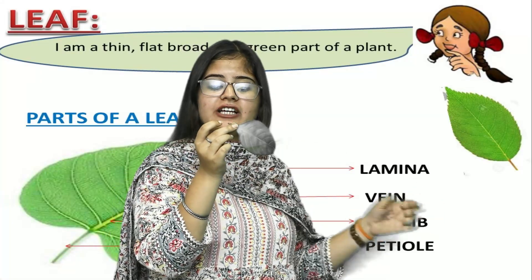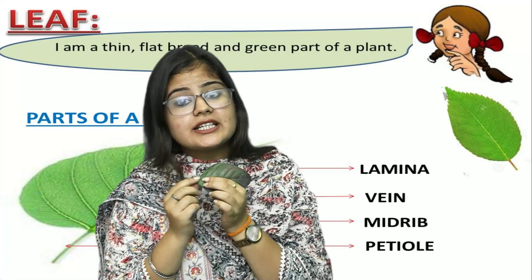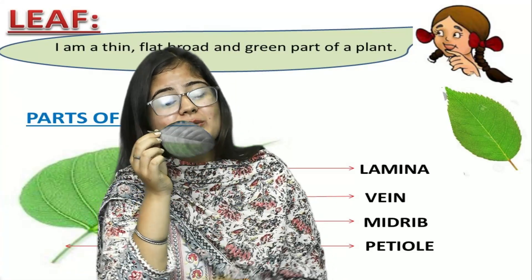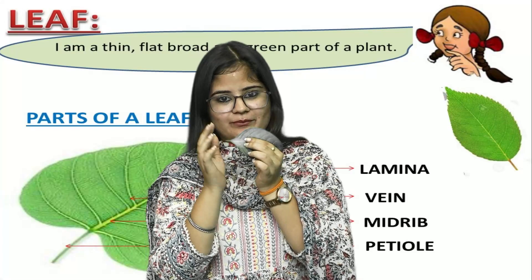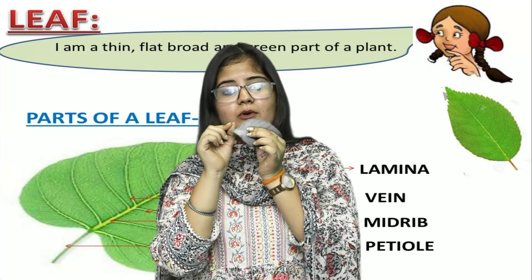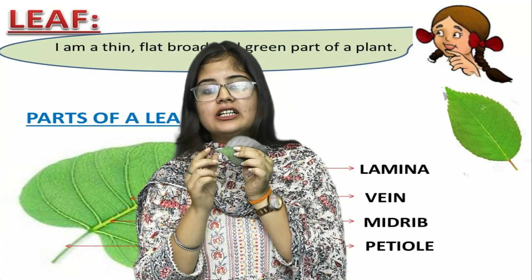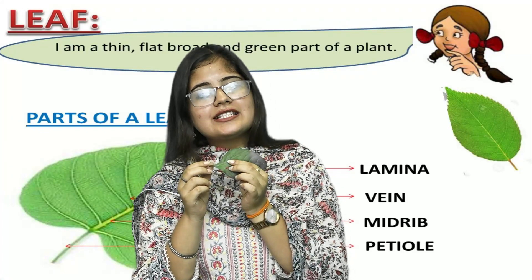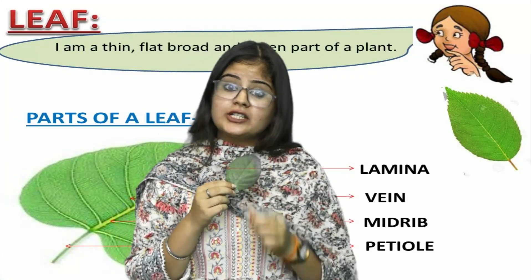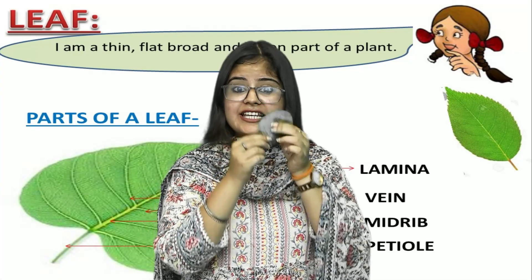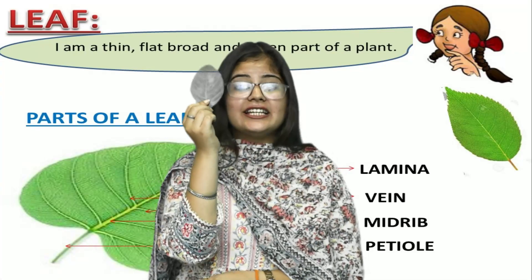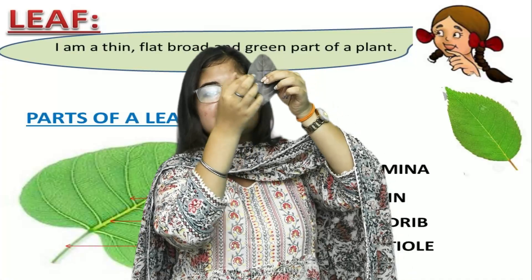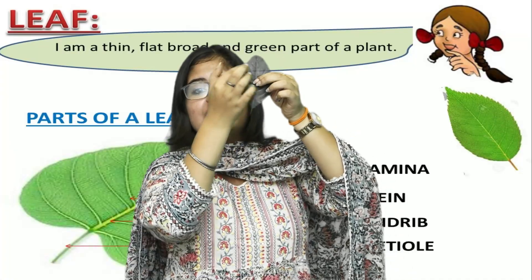The third part of the leaf is the petiole. The petiole is the point of attachment between the leaf and the stem of the plant — the point where the leaf connects to the stem. We can also see veins in a leaf; these are the veins which arise from the midrib.